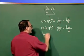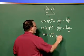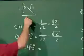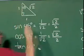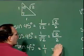The tangent of 45 degrees is the side opposite over the side adjacent: 1 over 1, which equals 1.